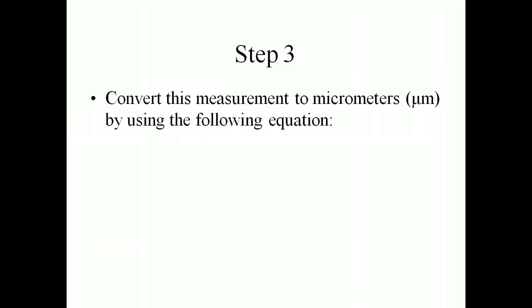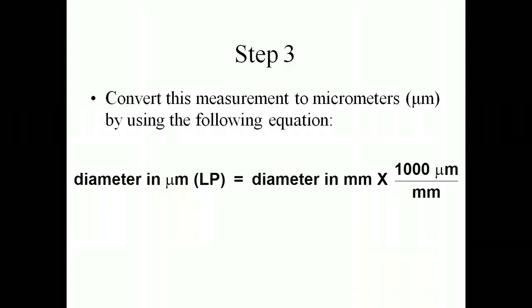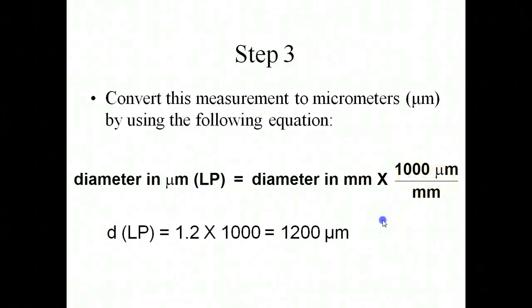Step number three, make sure you convert that measurement into micrometers. You can simply do that by using the equation to take the diameter under low power, which you just figured out, or your diameter of your microscope, which you'll have to look on your scope to figure out, which is equal to the diameter in millimeters times 1,000, and that will allow you to convert it into microns. Our field of view for this particular example is 1,200 microns.